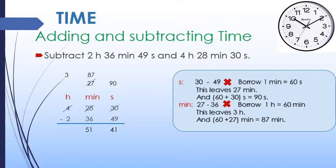Now we move to the hour column. We subtract 2 hours from 3 hours, which leaves 1 hour. So our final answer is 1 hour, 51 minutes, 41 seconds.